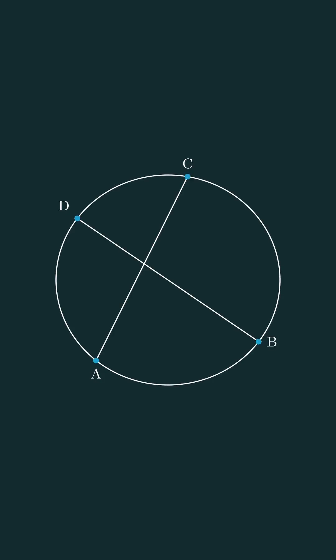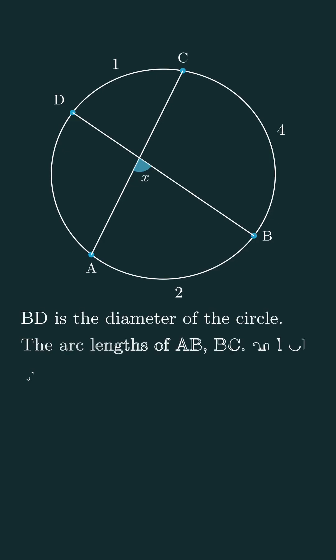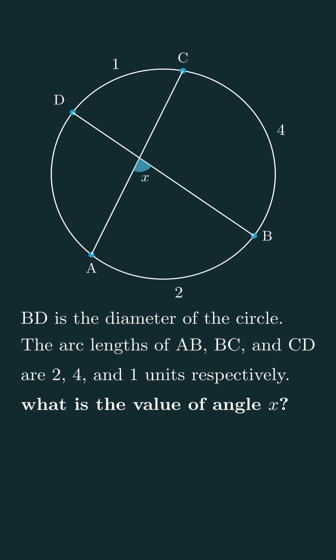Let's imagine we have a circle like this. And here's the question. BD is the diameter of the circle. The arc lengths of AB, BC, and CD are 2, 4, and 1 units respectively. Given this, what is the value of angle x?